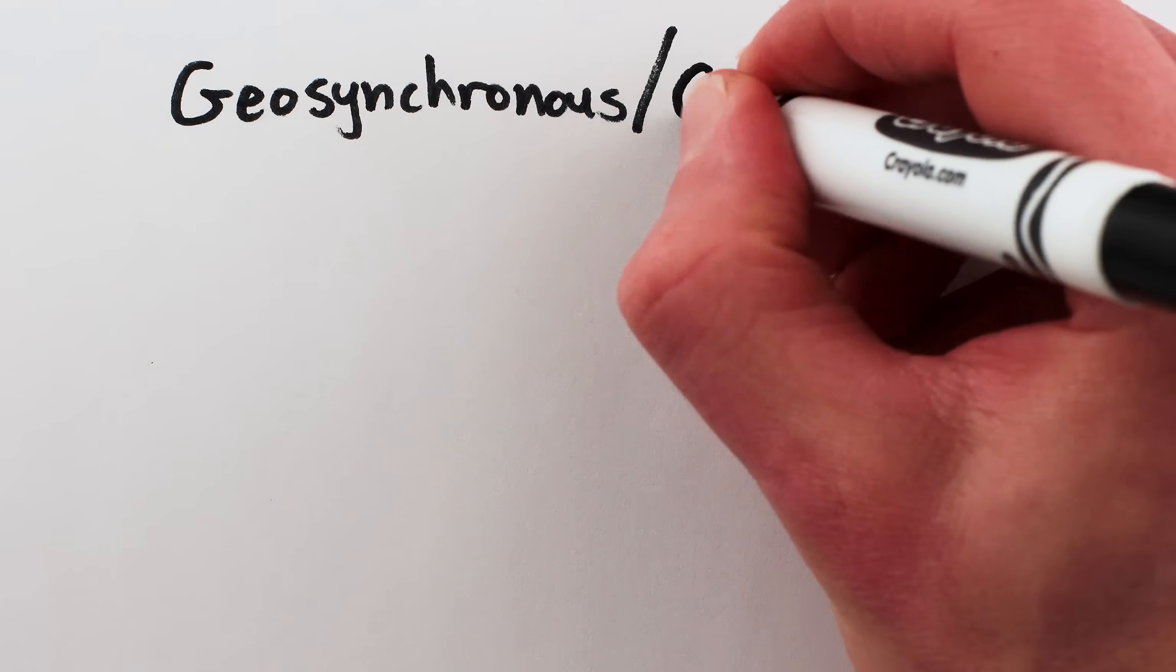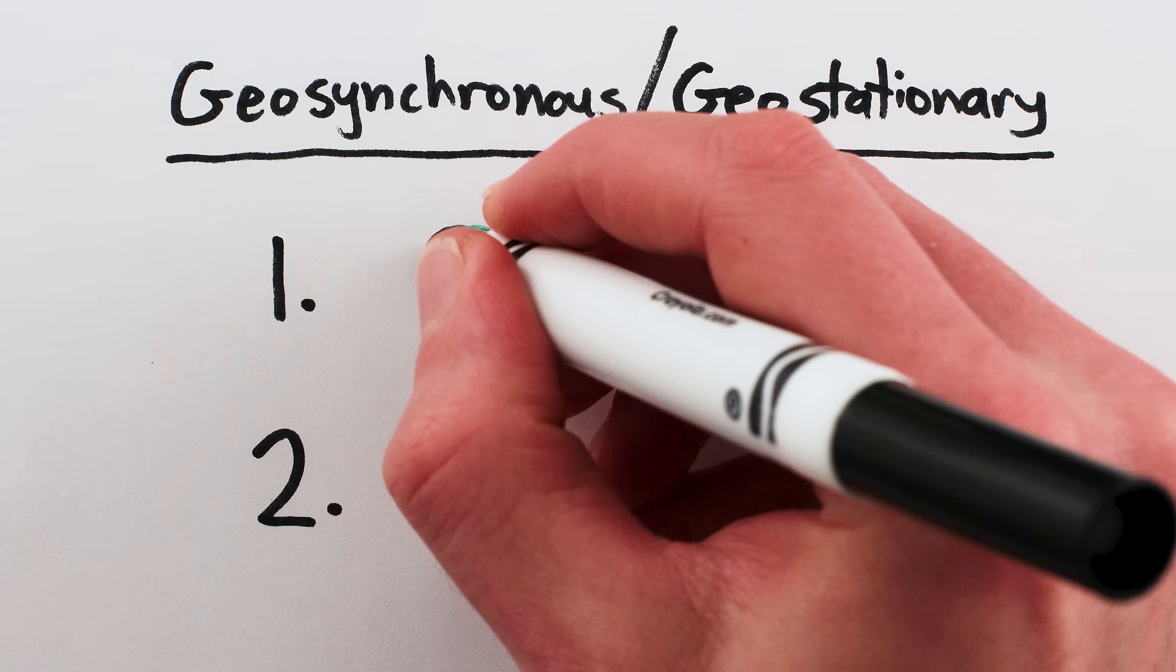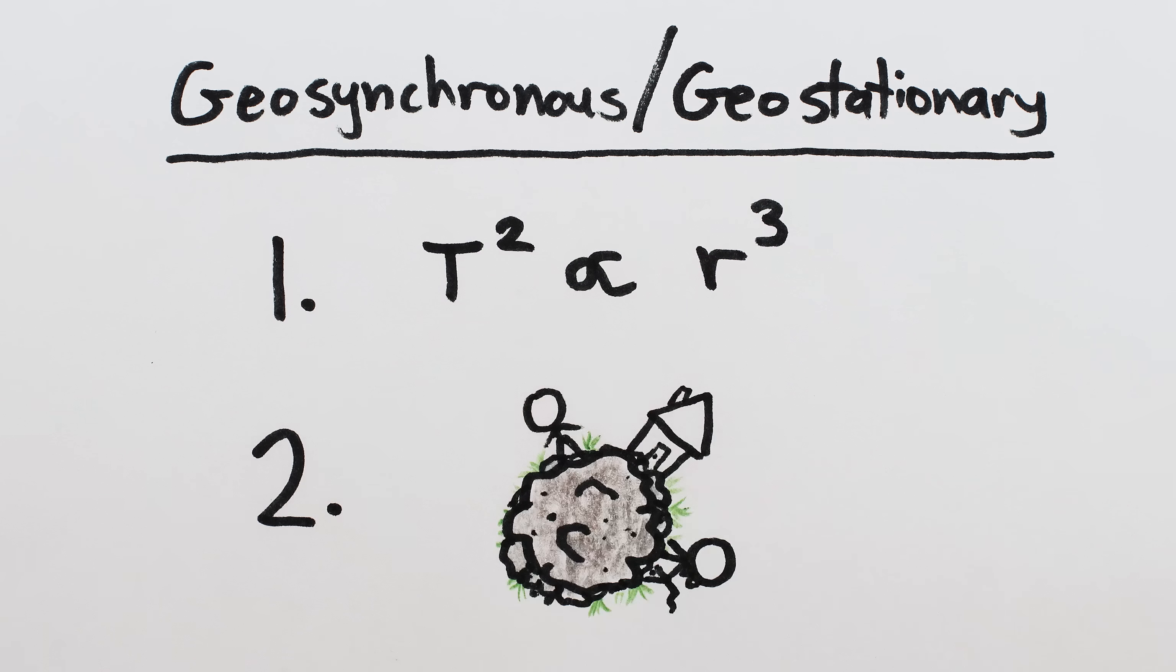But regardless of whether they're geosynchronous or geostationary, they are possible because of two things: Kepler's laws and the fact that we live on a pile of rock.